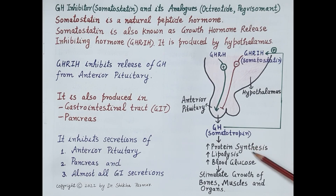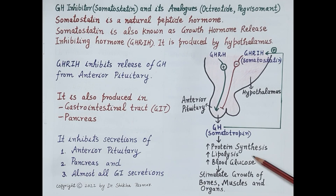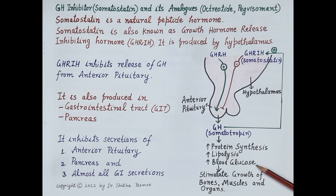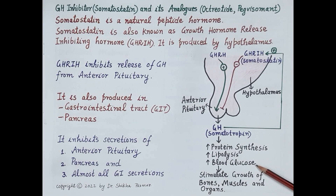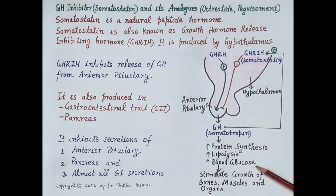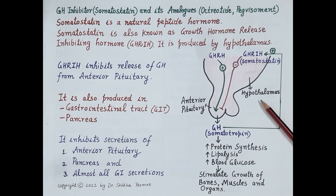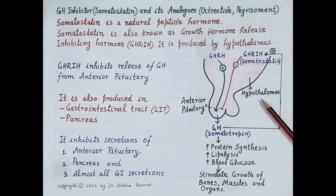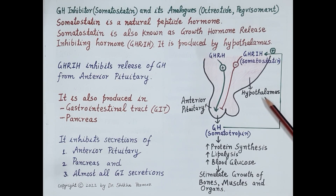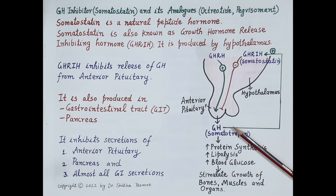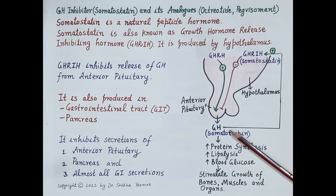Growth hormone stimulates increased protein synthesis. It also stimulates breakdown of fats, that is lipolysis, and it stimulates gluconeogenesis and glycogenolysis, which increases glucose in the blood. All these metabolic activities are responsible for inducing growth of bones, muscles, and body organs. Growth hormone is especially important for the growth of skeletal muscles and bones.